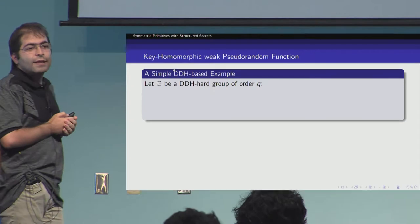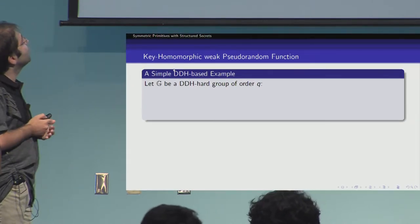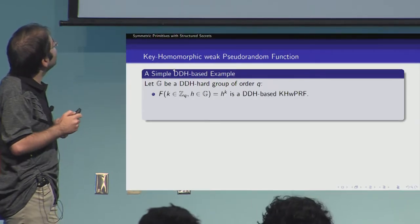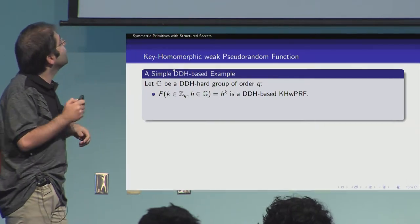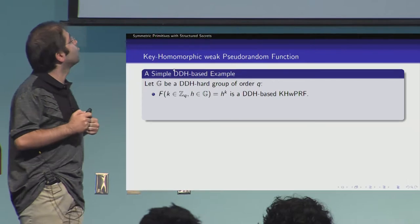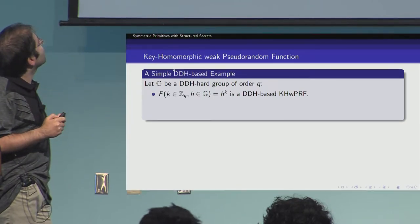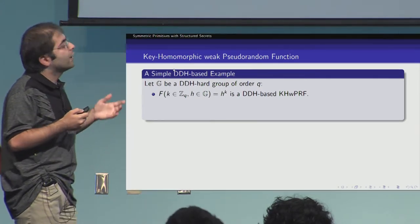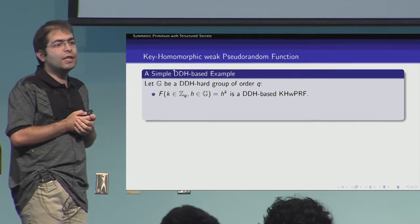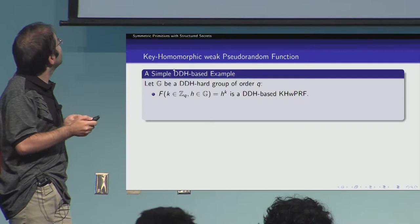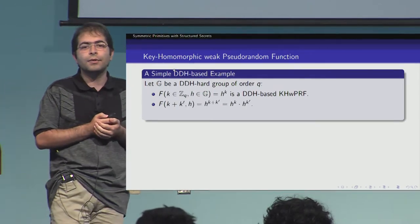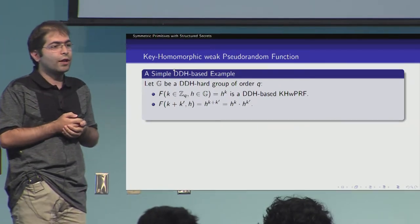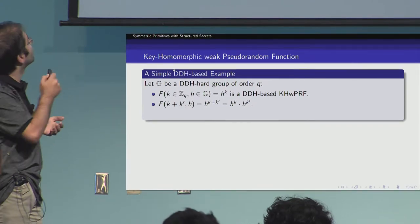Let's see a simple example of a keyhomomorphic weak PRF. Let G be a DDH-hard group of order Q. Consider the function F whose key space is Z_Q and whose input and output space are both the group G. If we define F(K, H) = H^K — a single exponentiation of a group element — it is easy to see that this is a weak PRF based on the DDH assumption, and it also satisfies the keyhomomorphism property: F(K + K', H) = F(K, H) · F(K', H), where the multiplication is the group operation over the output space.